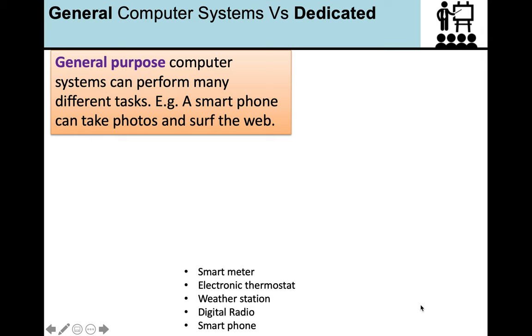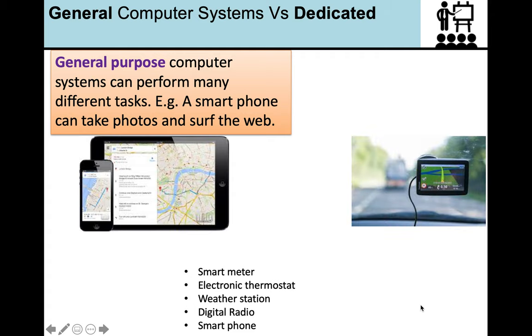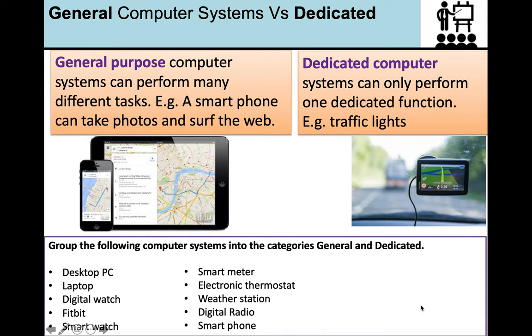So we're going to take a look at general computer systems versus dedicated computer systems. So a general purpose computer system can perform many different tasks. And an example of this is a smartphone. It can take photos and you can surf the webs. And most of the computers or traditional computers that we use are general purpose, like your iPad, your smartphone, and actually your smartwatch as well, because it does more than just tells the time.